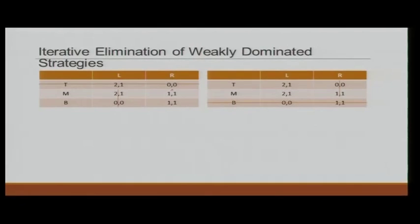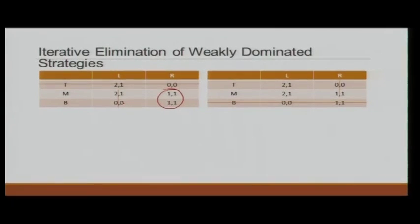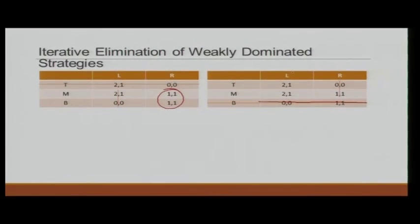These are two possible orderings. Also, note that M not only weakly dominates T but also weakly dominates B. If we instead remove B first, then L weakly dominates R in the reduced game — meaning R is weakly dominated by L — and we remove R. This leads to a different set of possibilities.